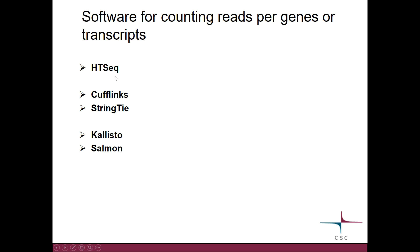HT-seq can count reads per genes or exons. There are also packages like Cufflinks and StringTie which can count reads both per genes and transcripts, and then Kallisto and Salmon which calculate per transcript, so they don't actually require that the reads would have been mapped to the genome first.